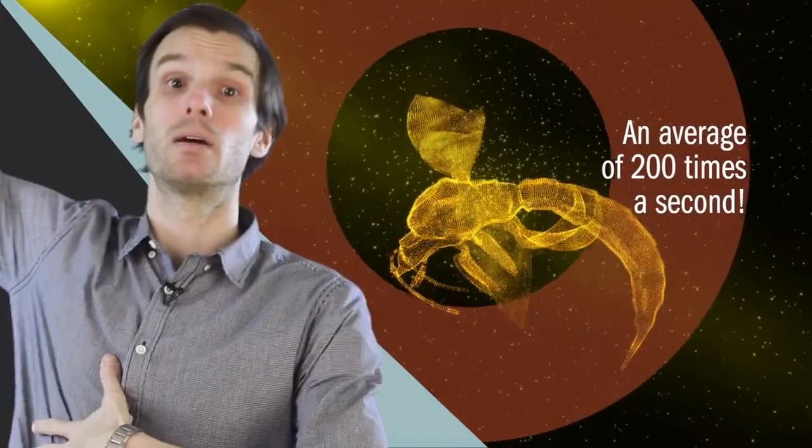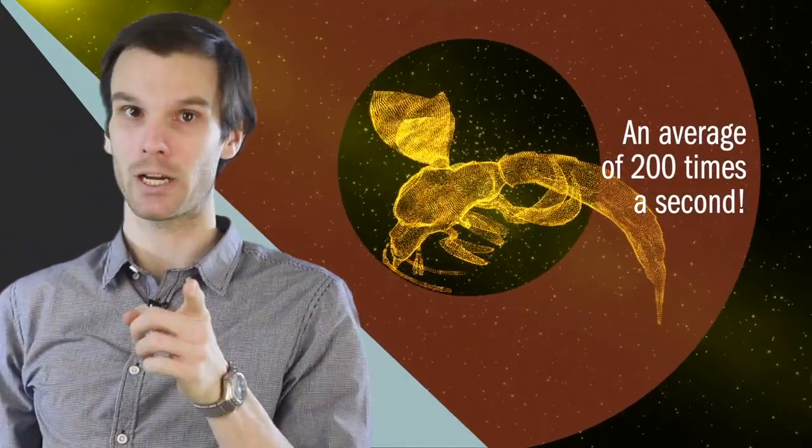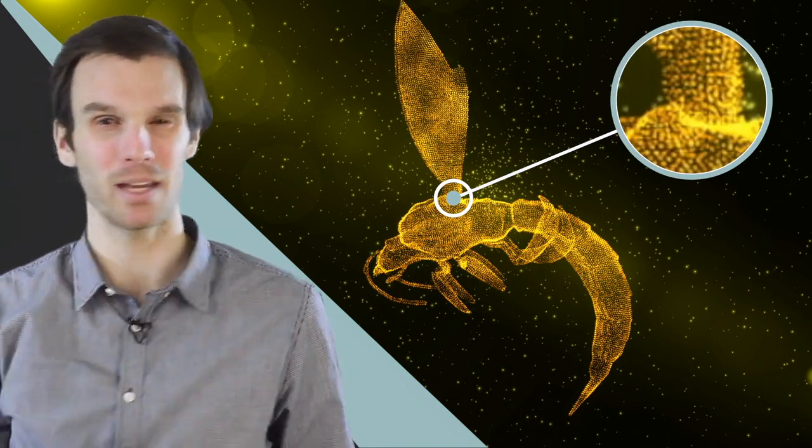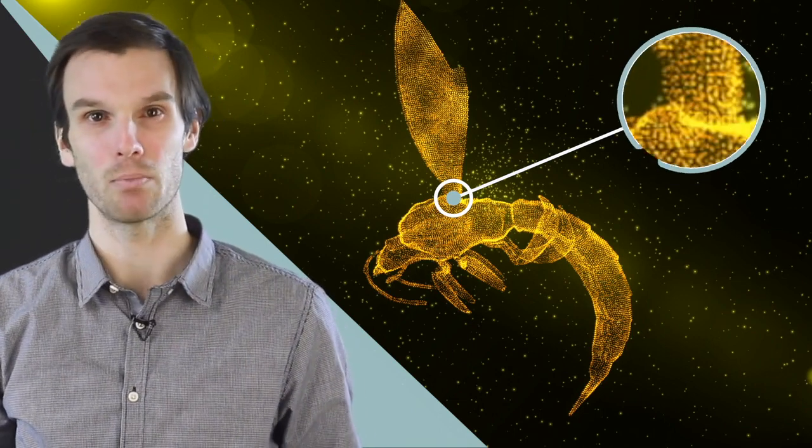Now imagine for a second an insect's wing. It goes up and comes down, but 200 times a second. Resilin, that stretchy, solid, elastic band-type material I study, is what pulls the wing back down towards the insect's body.